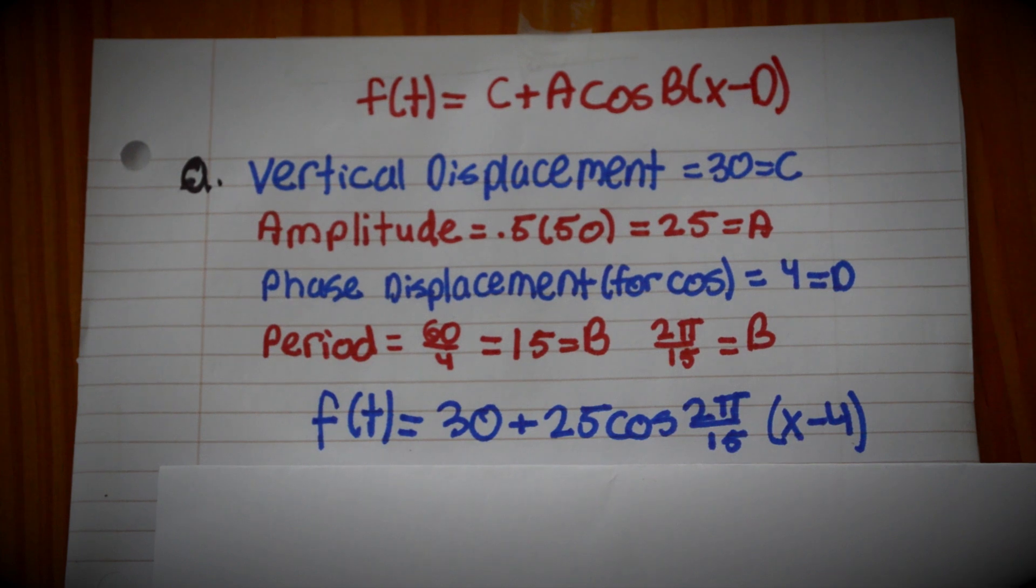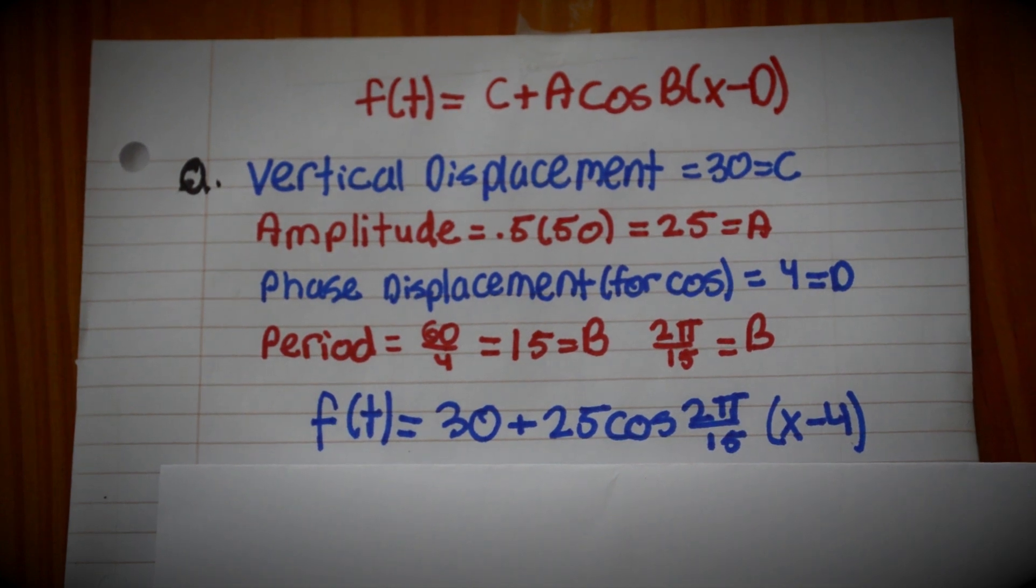This gives us the equation f(t) equals 30 plus 25 cosine 2π over 15 times the quantity of x minus 4.